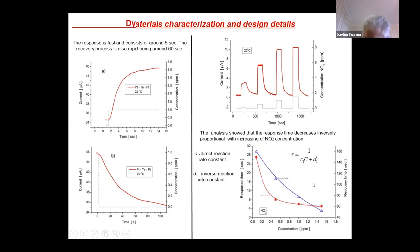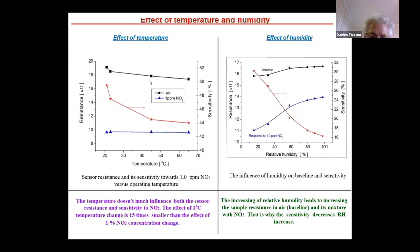The effect of temperature. Here you can see the variation of the resistance and sensitivity of the sensor with increasing of temperature. The conclusion is that temperature does not much influence both the sensor resistance and sensitivity. The effect of one degree centigrade temperature change is 15 times smaller than the effect of one percent of NO2 concentration change.